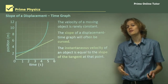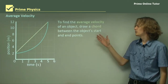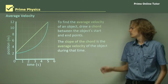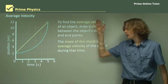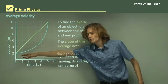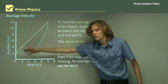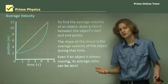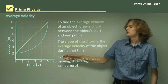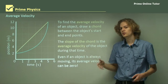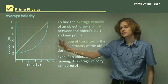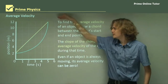As well as finding the instantaneous velocity, we can find the average velocity of an object. To find the average velocity with a graph, we draw a chord between the object's start point and its end point. The slope of this chord is the average velocity of the object over all that time. If an object moves up and then back down again, drawing a chord from start to end would result in a flat line, meaning its average velocity is zero. Here, the object moves about 10 meters over five seconds, so its average velocity is 10 divided by two — five meters per second.